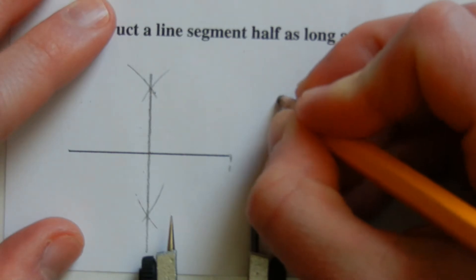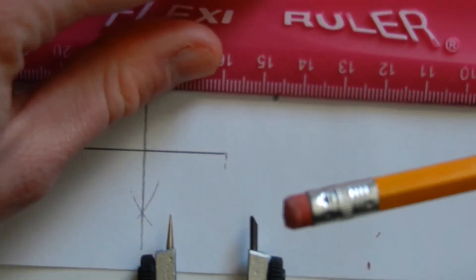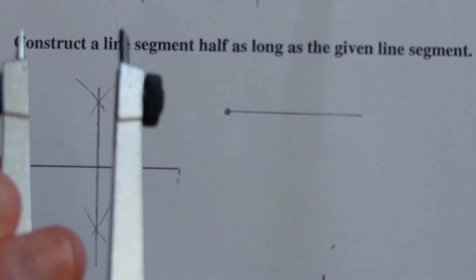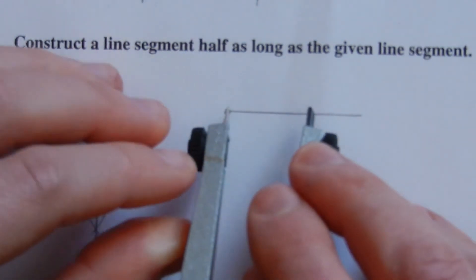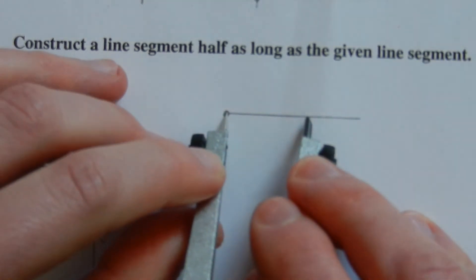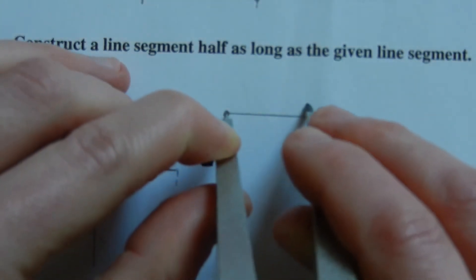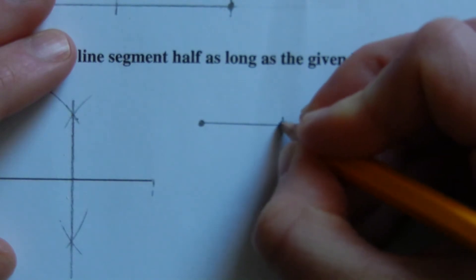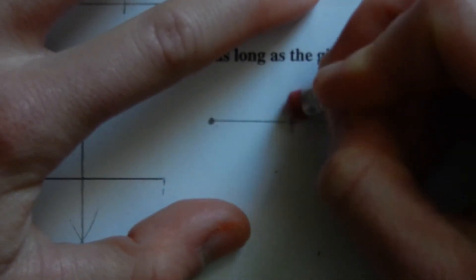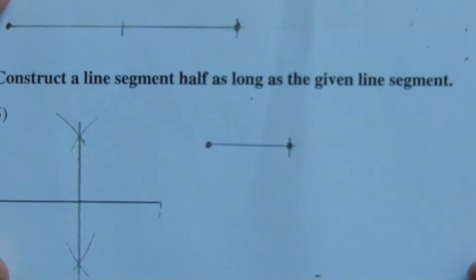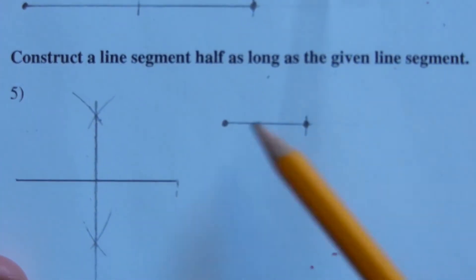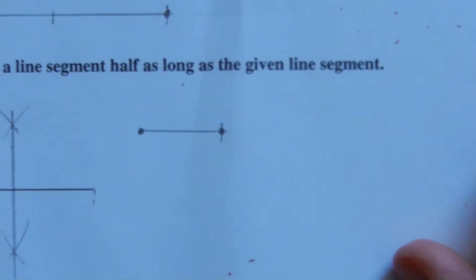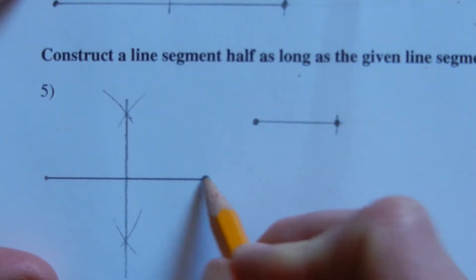Now we draw our new line's starting point and extend a straight line from it. Taking the measurement of the half-length segment, we mark that on our new line. That mark becomes our new endpoint and we erase what's beyond it. From endpoint to that mark is our new line segment that is half as long as the given line segment.